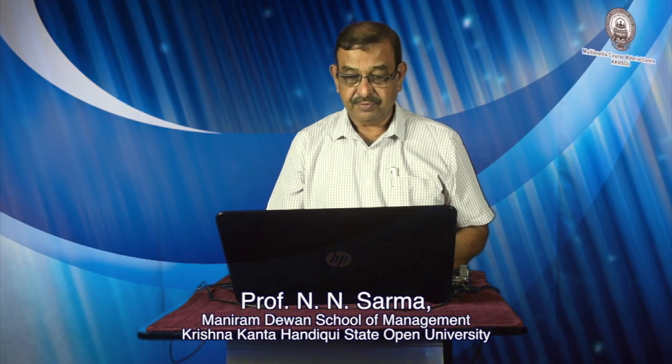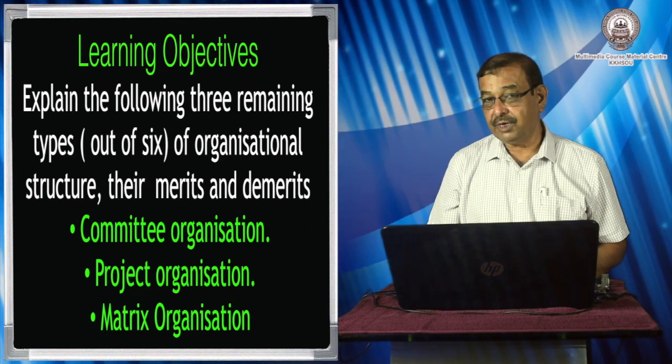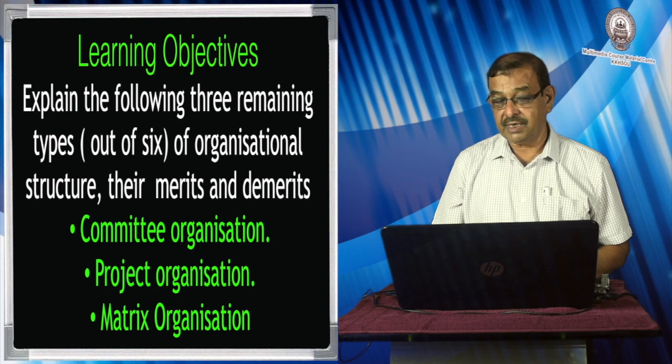Dear learners, we are continuing our discussion on unit 5, that is organizing, and this is the last part of the video. This part is also based on part 2, where we discussed the organizational structure of three kinds: line organization, line and staff, and functional. Here we shall discuss three other types: committee organization, project organization, and matrix organization.